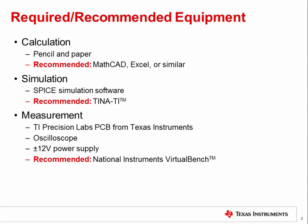The real-world measurements are made using a printed circuit board, or PCB, provided by Texas Instruments. If you have access to standard lab equipment, you can make the necessary measurements with any oscilloscope and a plus or minus 12-volt power supply. However, we highly recommend the Virtual Bench from National Instruments, which is an all-in-one test equipment solution connecting to a computer over USB or Wi-Fi, and provides power supply rails, analog signal generator and oscilloscope channels, and a 5-and-a-half digit multimeter. This lab is optimized for use with the Virtual Bench.